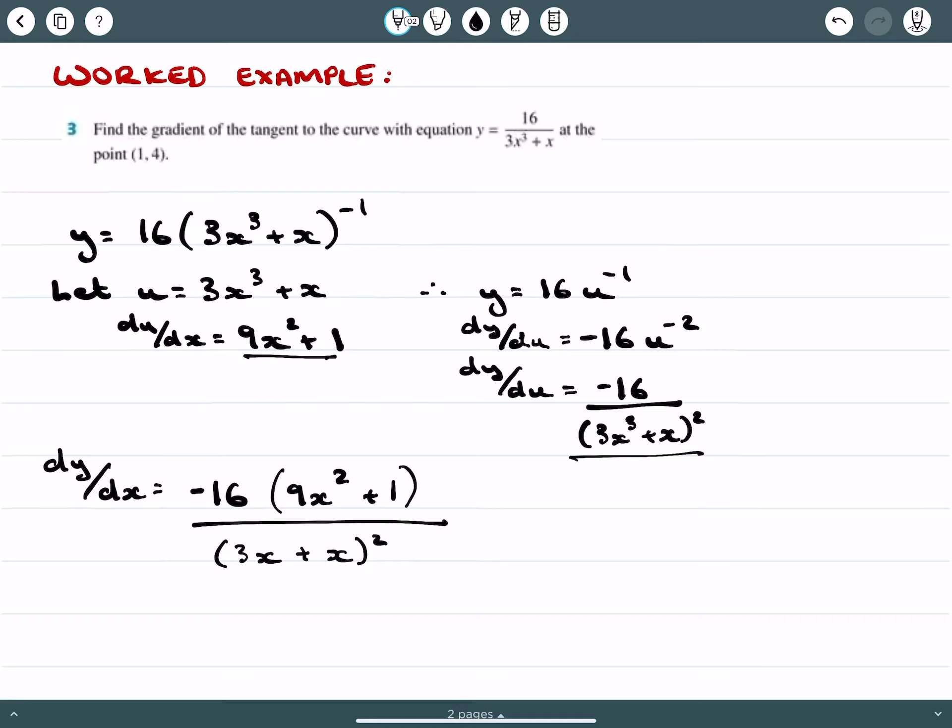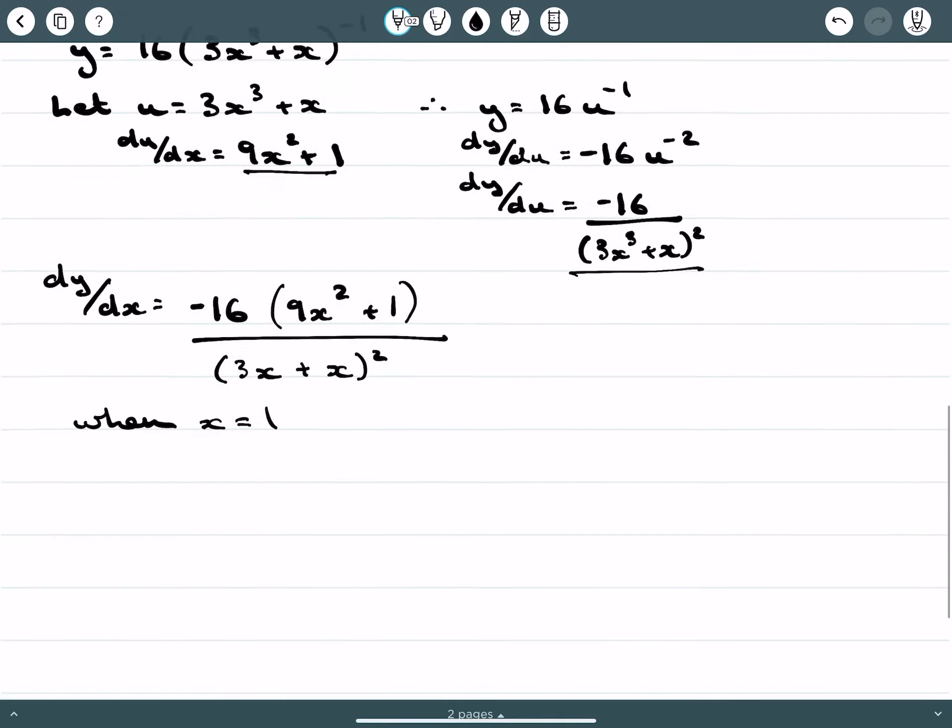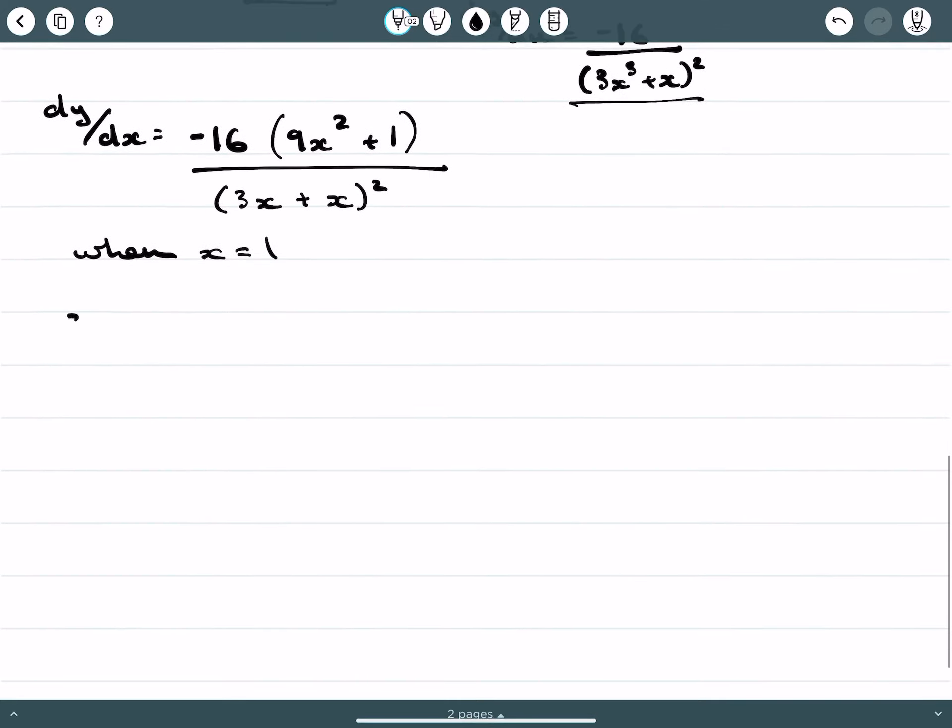The question is asking what is the gradient of the tangent, so what is dy/dx at the point 1, 4, which means when x equals 1. When x equals 1, dy/dx equals negative 16 times 9 plus 1, all on 3 plus 1 squared.